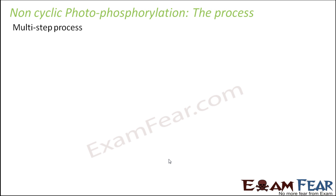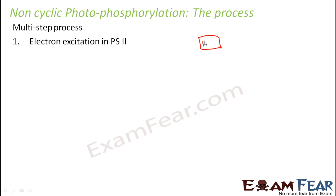Let us try to understand the process of non-cyclic photophosphorylation step by step. It is a multi-step process, so we will jot down all the steps and then discuss each one. The first step is electron excitation in PS2. The story starts with PS2 — when light falls on PS2, electrons get excited. That is the first step.